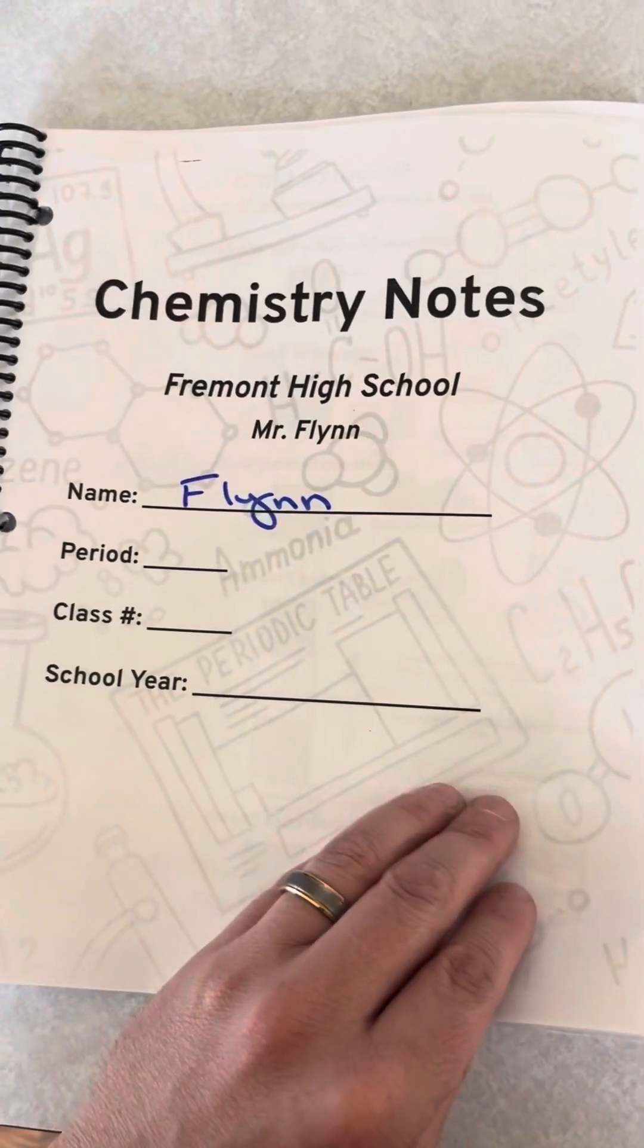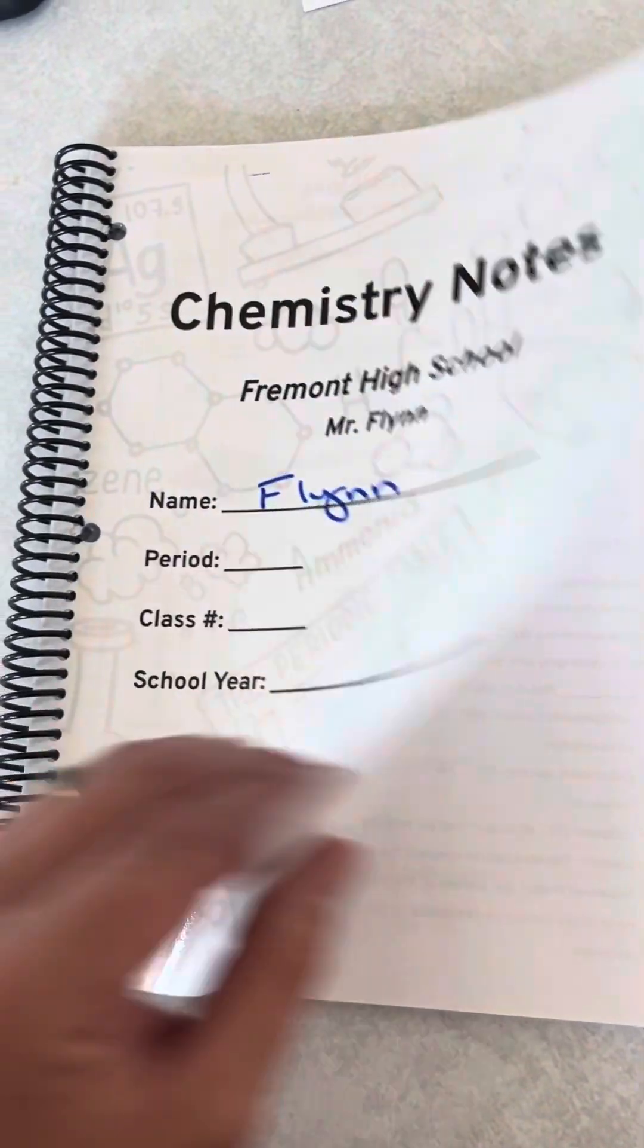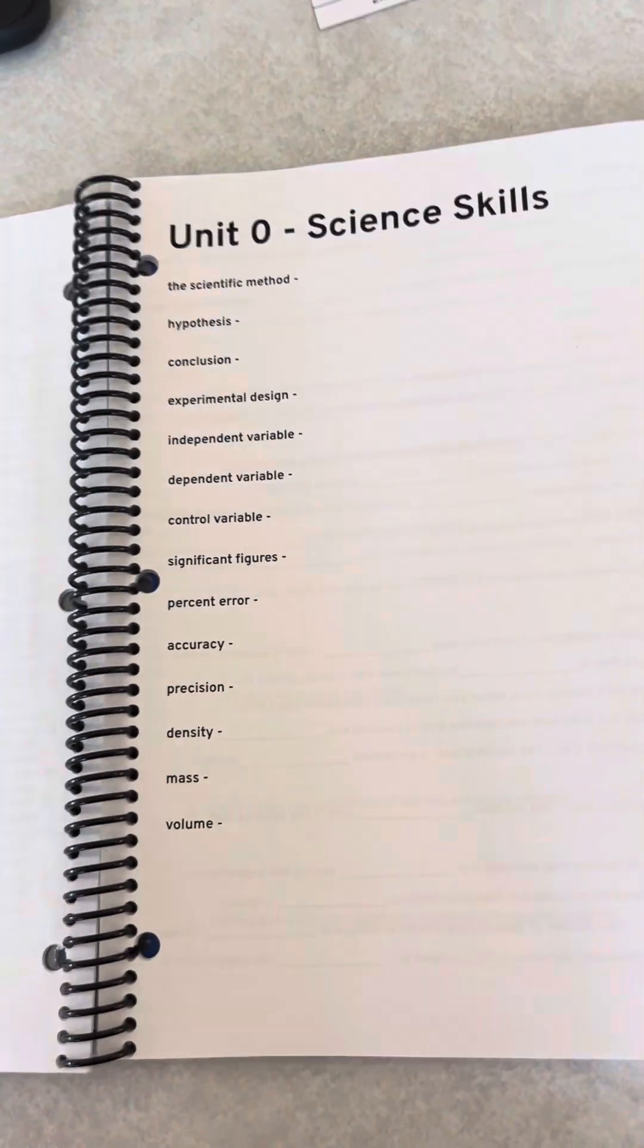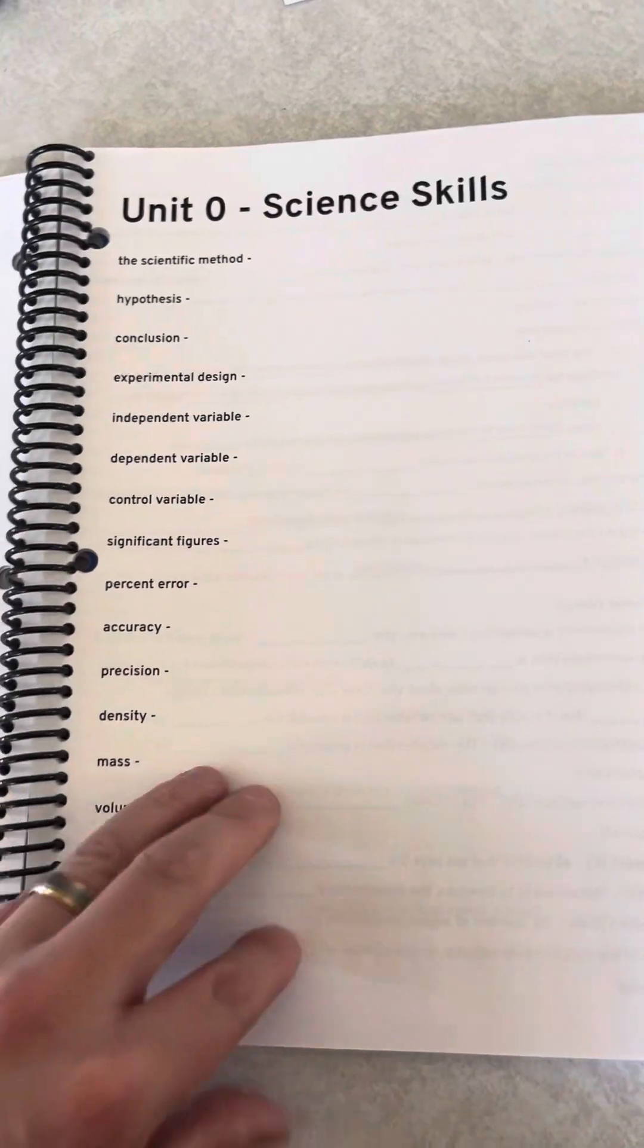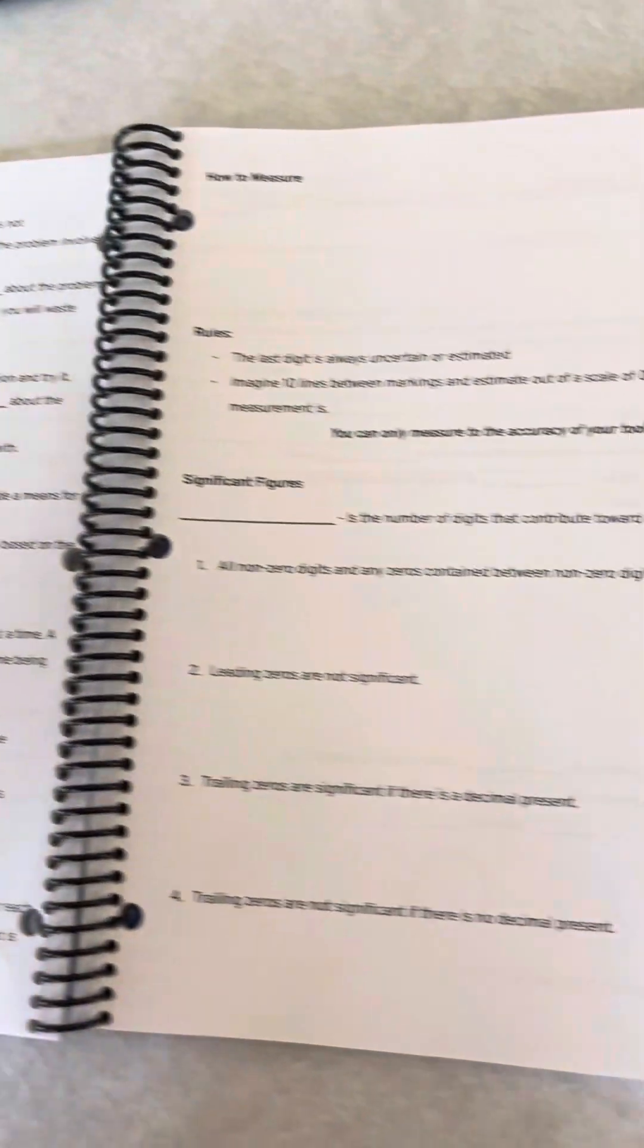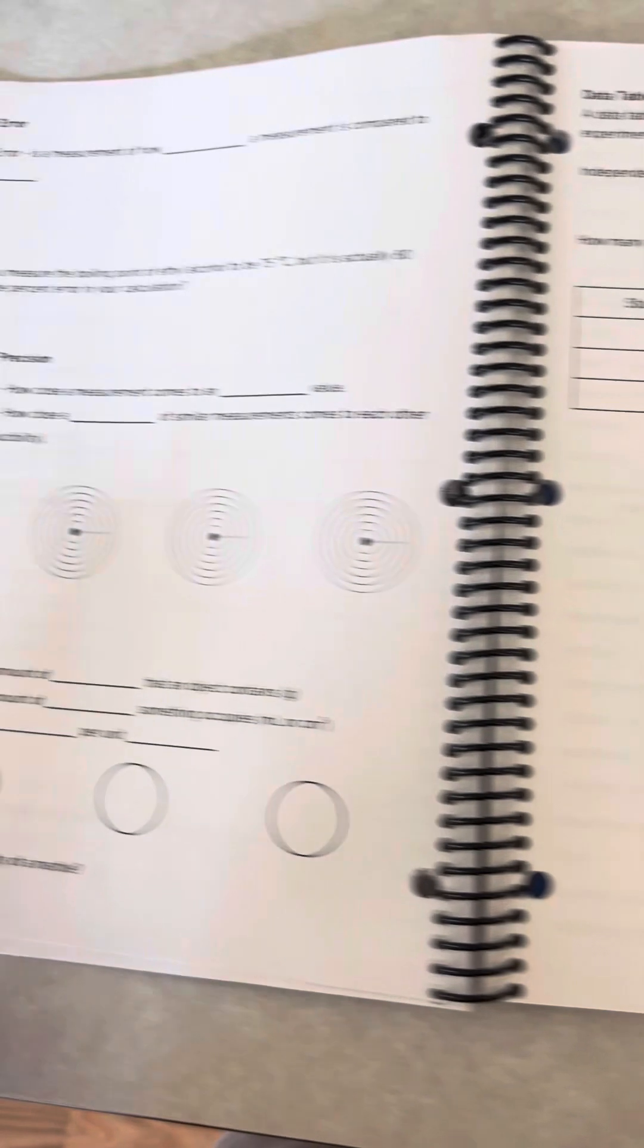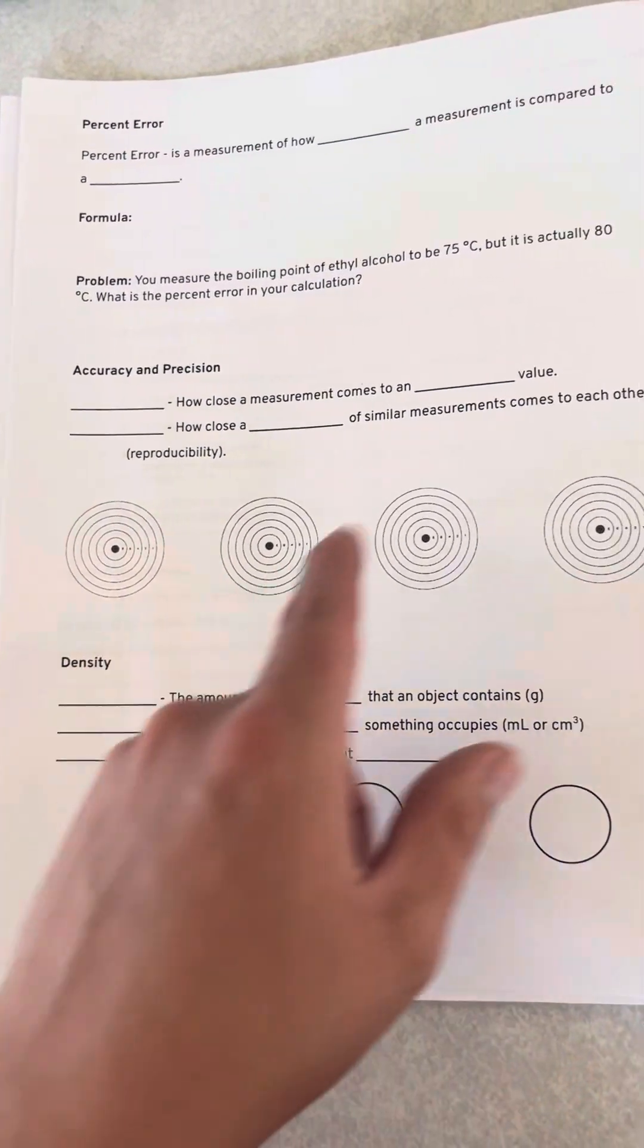So how it works is notes are the first section. This is not, they're never going to like, I'm never going to look at these. This is for them. So they're going to do the vocab from the reading, and then we're going to just do it together. Like I'm going to go through and explain accuracy and precision, and we're going to draw out our notes.